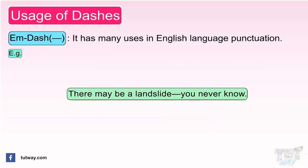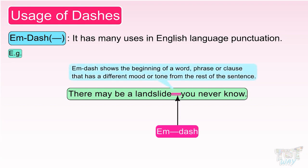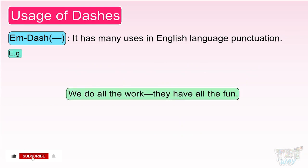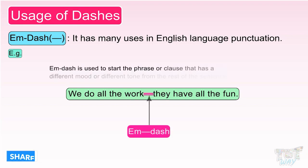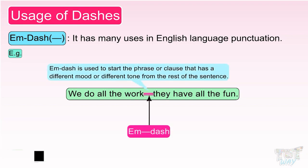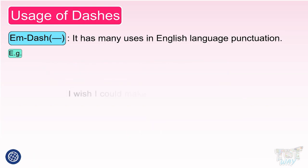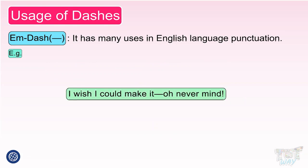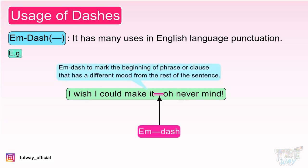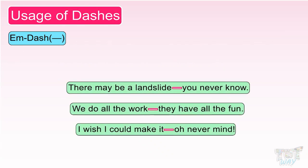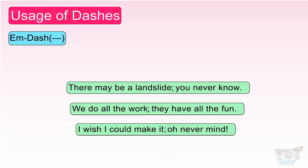Here again, M dash shows the beginning of the word or phrase or clause that has a different mood or tone from the rest of the sentence. 'We do all the work—they have all the fun.' Here again, M dash is used to start the phrase or clause that has a different mood or tone from the rest of the sentence. 'I wish I could make it—oh, never mind.' You can also notice that M dash is used as a semicolon to give a bigger pause than a comma.